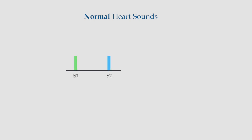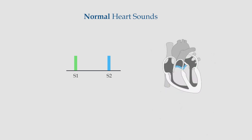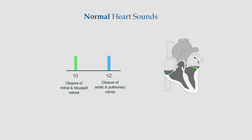Welcome to this short but informative video. We will review quickly the normal heart sounds. The normal sounds include first and second heart sounds, also known as S1 and S2 respectively. These are produced by the closure of heart valves. S1 is produced due to the closure of mitral and tricuspid valves, while S2 is produced by the closure of aortic and pulmonary valves.